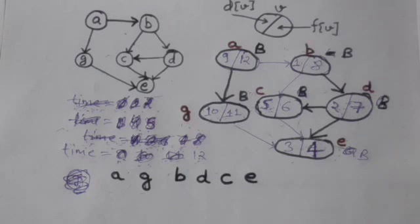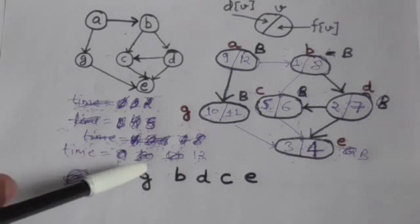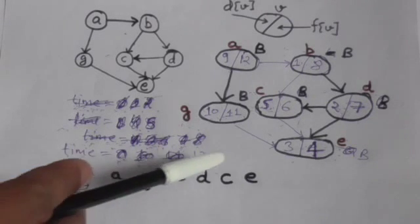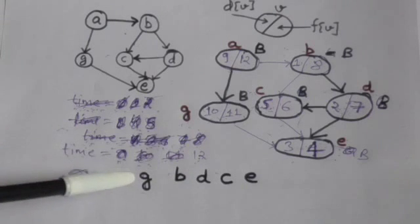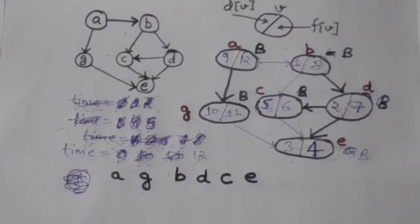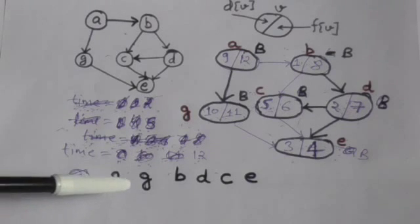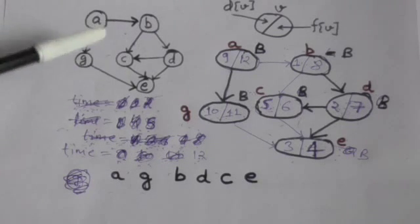Now see this linear ordering of vertices. This linear ordering of vertices is the topological sort of this directed acyclic graph.